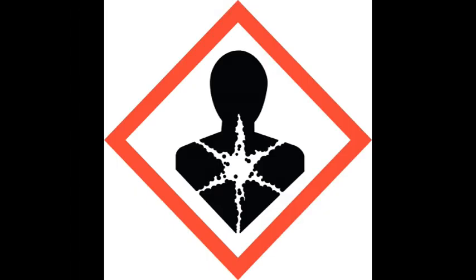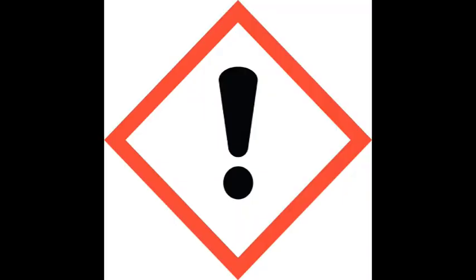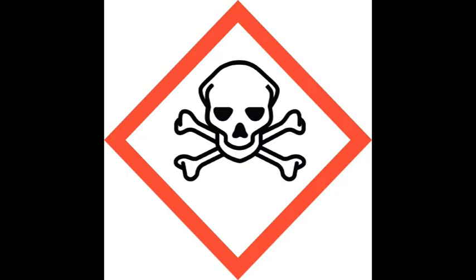There are nine pictogram symbols. They are: health hazard, flame, exclamation mark, gas cylinder, corrosion, exploding bomb, flame over a circle, environmental (which is non-mandatory), and skull and crossbones.